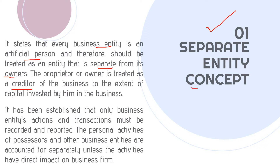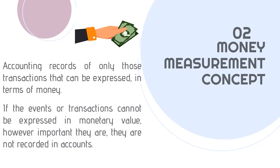According to this concept, only the business entity's transactions will be recorded in the financial statements. Personal transactions of the owner will not be recorded and reported in the financial statements of the business. The second concept is the money measurement concept, which means only transactions that can be expressed in terms of money are recorded.